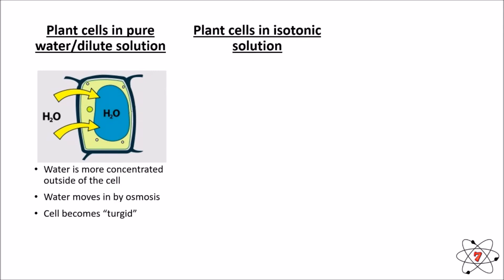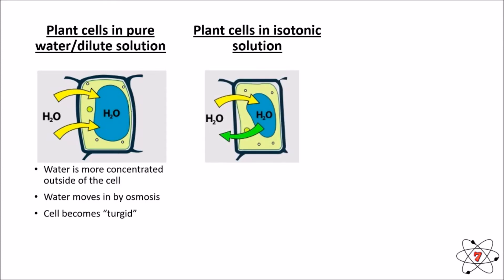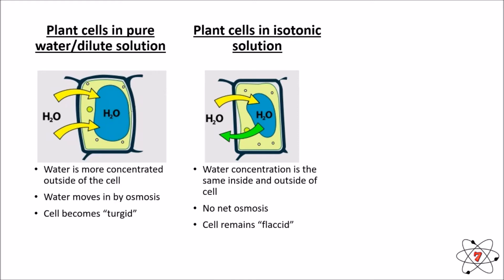If we put plant cells in an isotonic solution, water moves both in and out of the cell because the concentration of water is the same inside and outside. Although diffusion takes place, there is no net osmosis because the amount of water moving in equals the amount moving out. The cell remains flaccid — meaning the vacuole is not completely full with water, the cytoplasm is not pushing hard against the cell wall, and the cell is in its normal state.